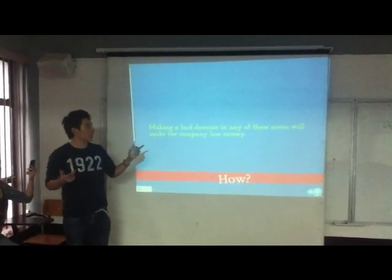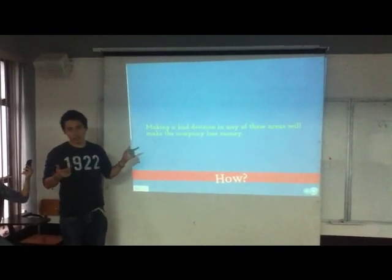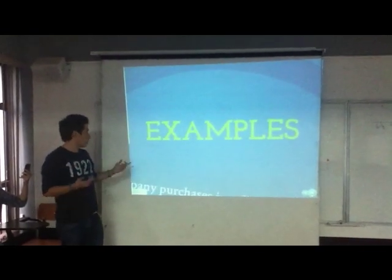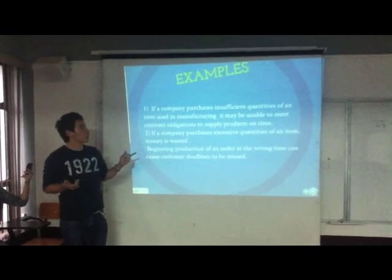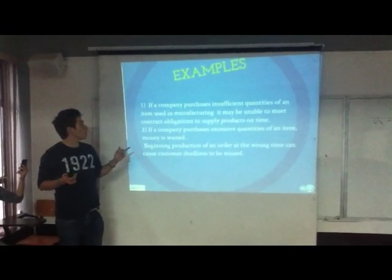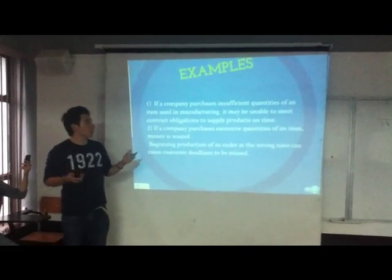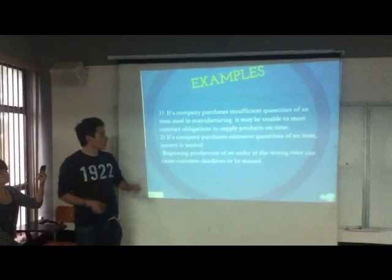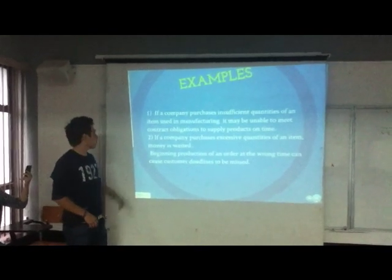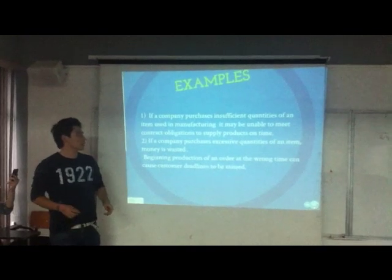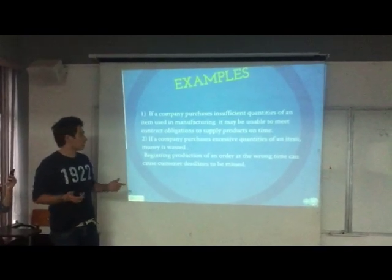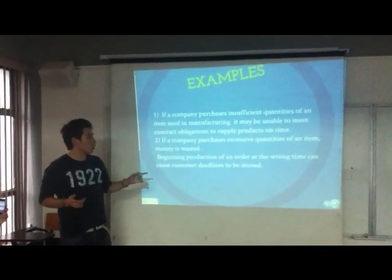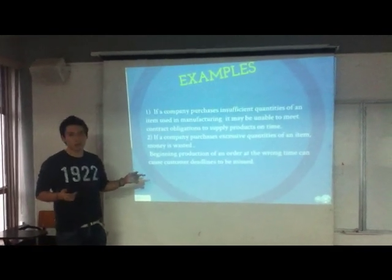Making a bad decision in any of these areas will make the company lose money. For example, if a company purchases insufficient quantities of items used in manufacturing, it may be unable to meet contract obligations to supply products on time. If a company purchases excessive quantities of an item, money is wasted. Beginning production of an order at the wrong time can cause a customer's deadlines to be missed.